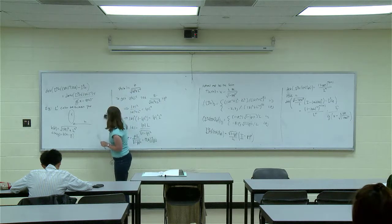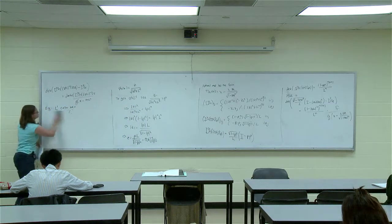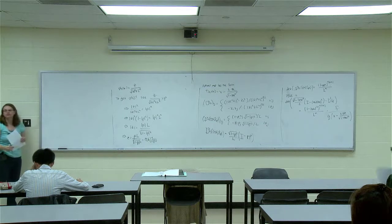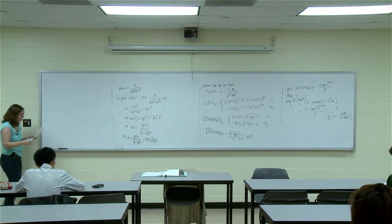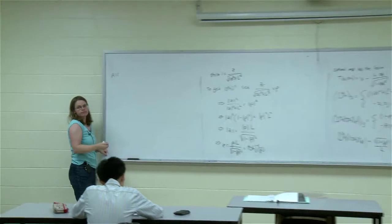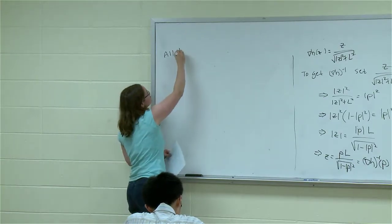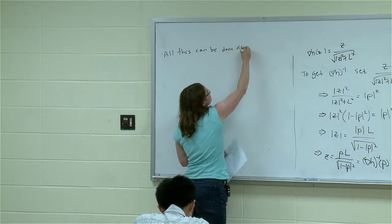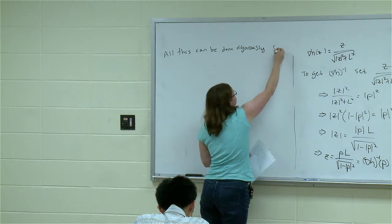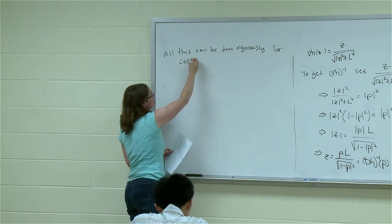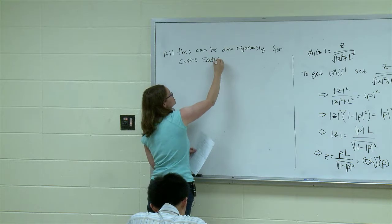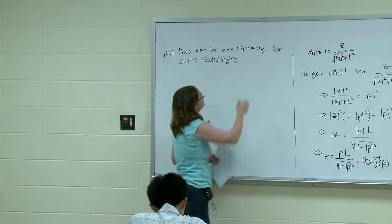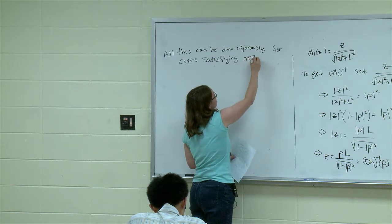There's a list of conditions that we need our cost to satisfy to be able to do this. Most of these are kind of obvious, and then one of them is not. But all of this, all the hand-waving I kind of did last class can be made rigorous if our cost satisfies a few basic conditions and one maybe non-basic condition. These are the so-called MTW conditions.